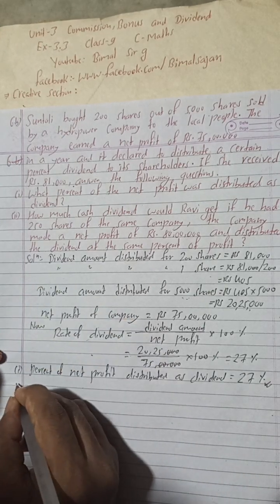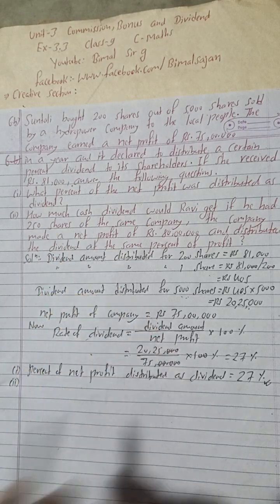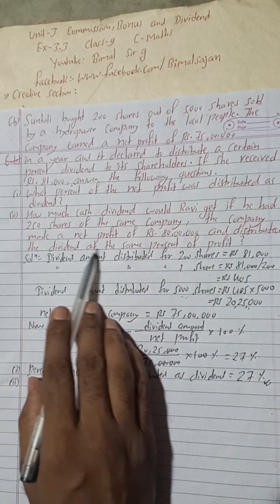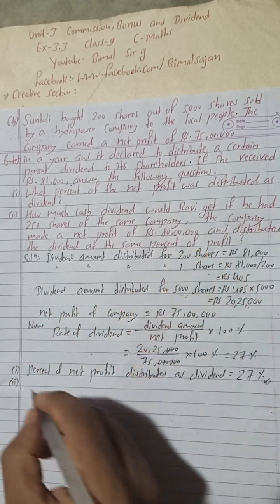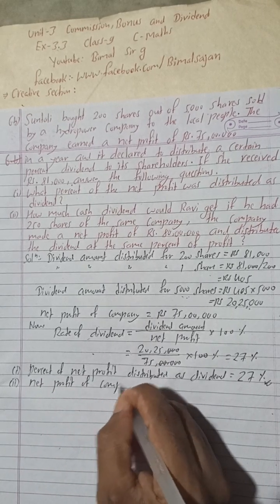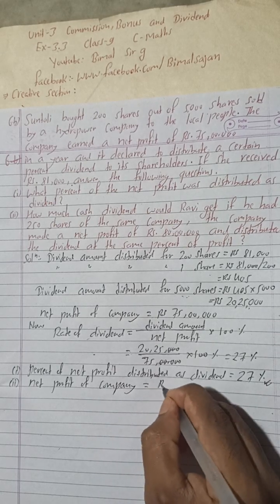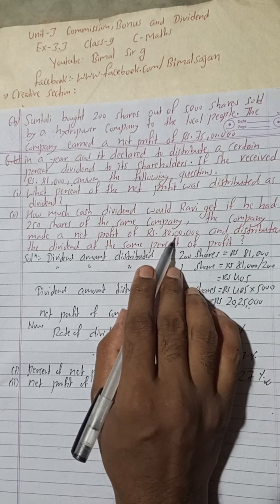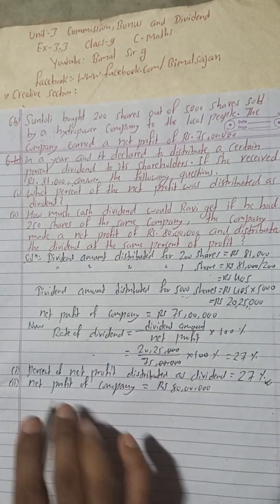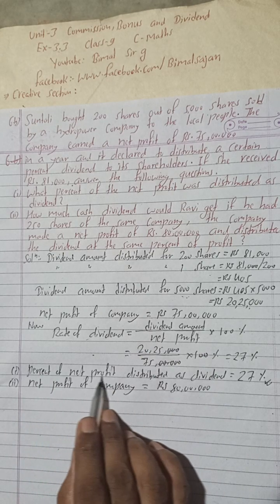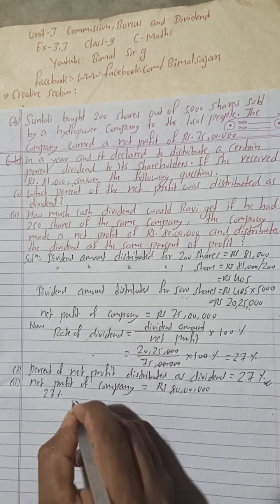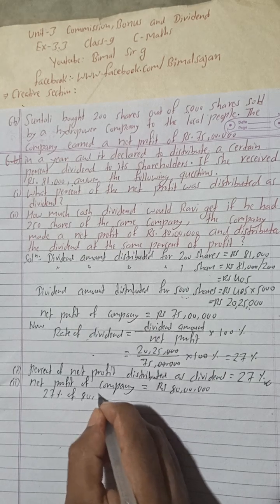Now for question 2: how much cash dividend would Ravi get if he had 250 shares, given the company made a net profit of Rs 80 lakh? Net profit of the company is Rs 80 lakh. We already found the dividend rate is 27%, so 27% of Rs 80 lakh gives the total dividend distributed.